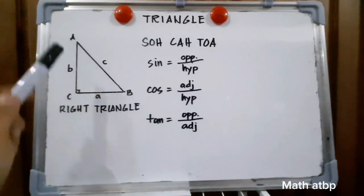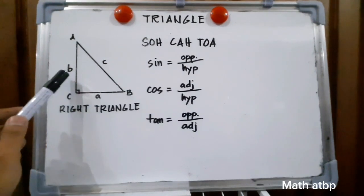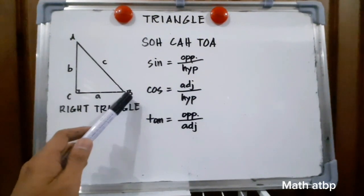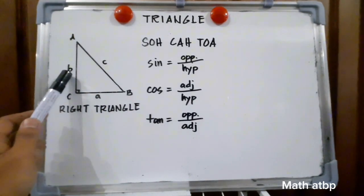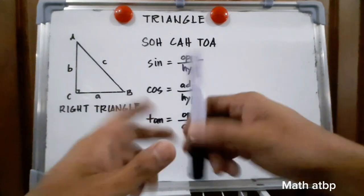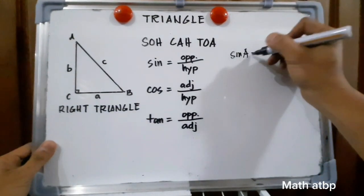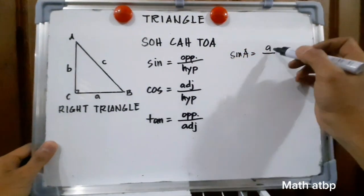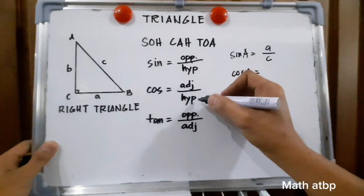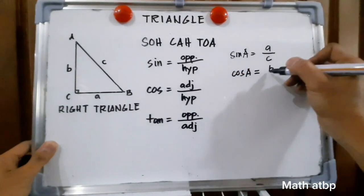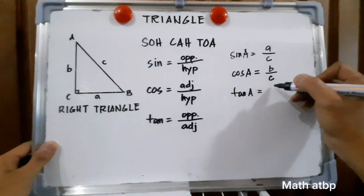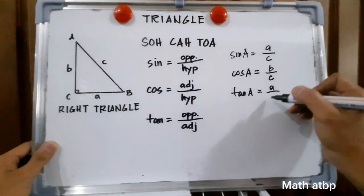The opposite of angle A is side A, and the adjacent side of angle A is side B, while the hypotenuse is side C. In formula: sine of A is equal to the opposite over the hypotenuse, which is A over C. Cosine of A is equal to the adjacent over the hypotenuse, which is B over C. Tangent of A is equal to opposite over adjacent, which is A over B.